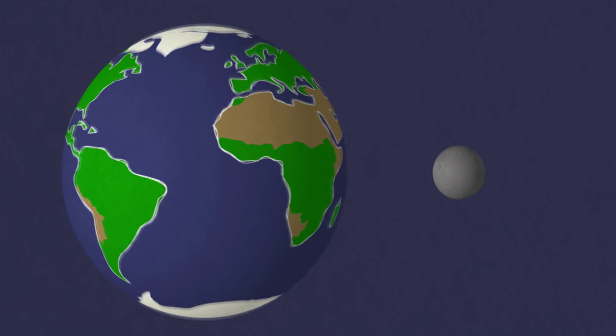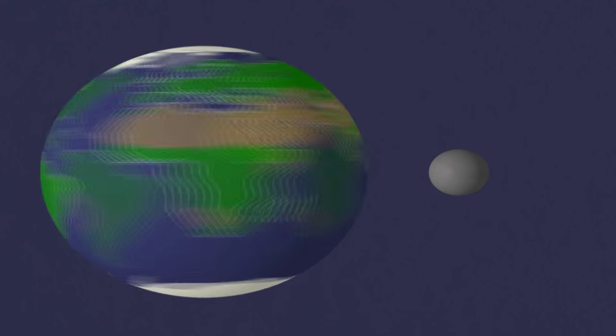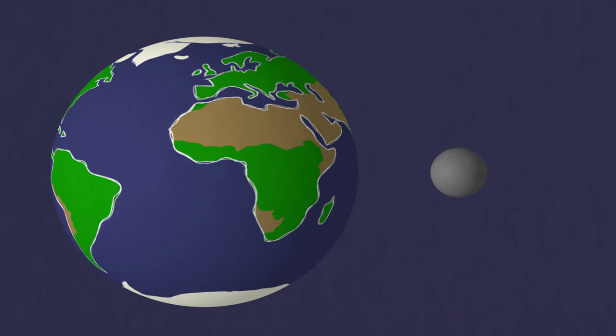Dwarf planets are a lot like regular planets. They both have enough mass and gravity to be nearly round, unlike odd-shaped asteroids.